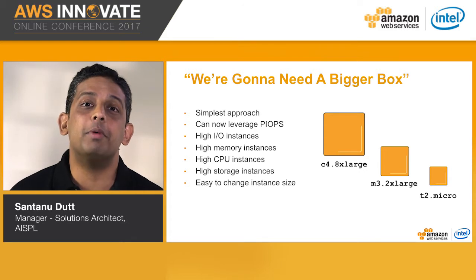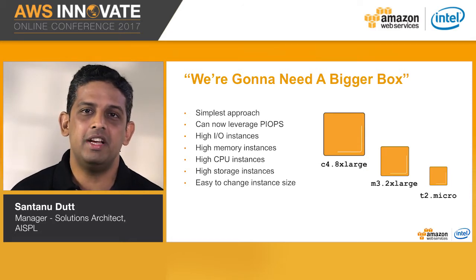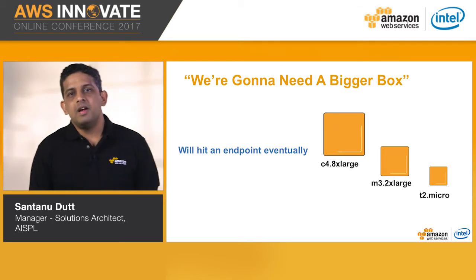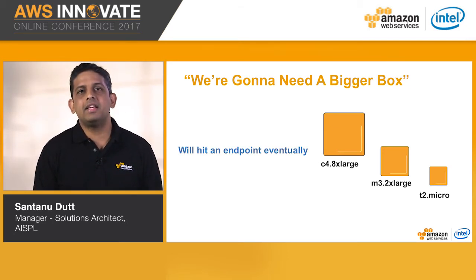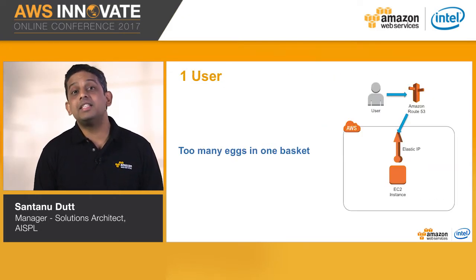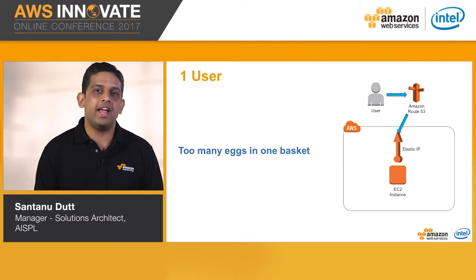You also have the latest generation of general purpose instances. Inside each instance family are different sizes, ranging from micro in the T2 family to 8XL in many other families. This allows you to scale vertically inside the family that best supports your workload. However, you will eventually hit an endpoint where we just don't have a bigger instance class. Scaling this way isn't going to get you that far in the long run. And there's a single point of failure — if that EC2 instance goes down, nothing else takes over the traffic.